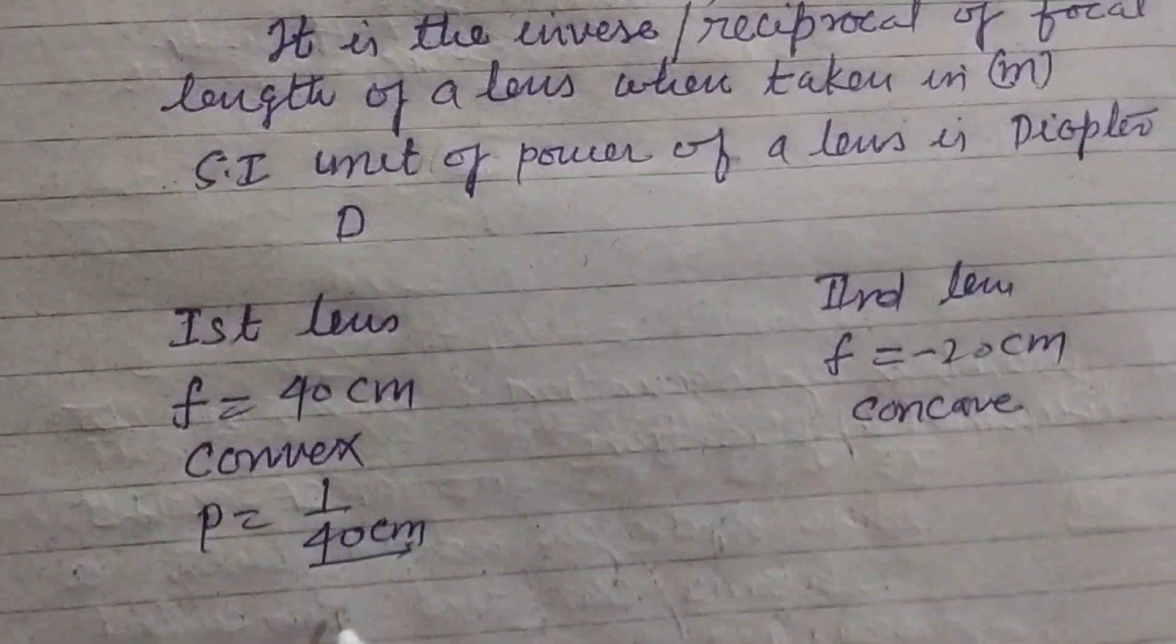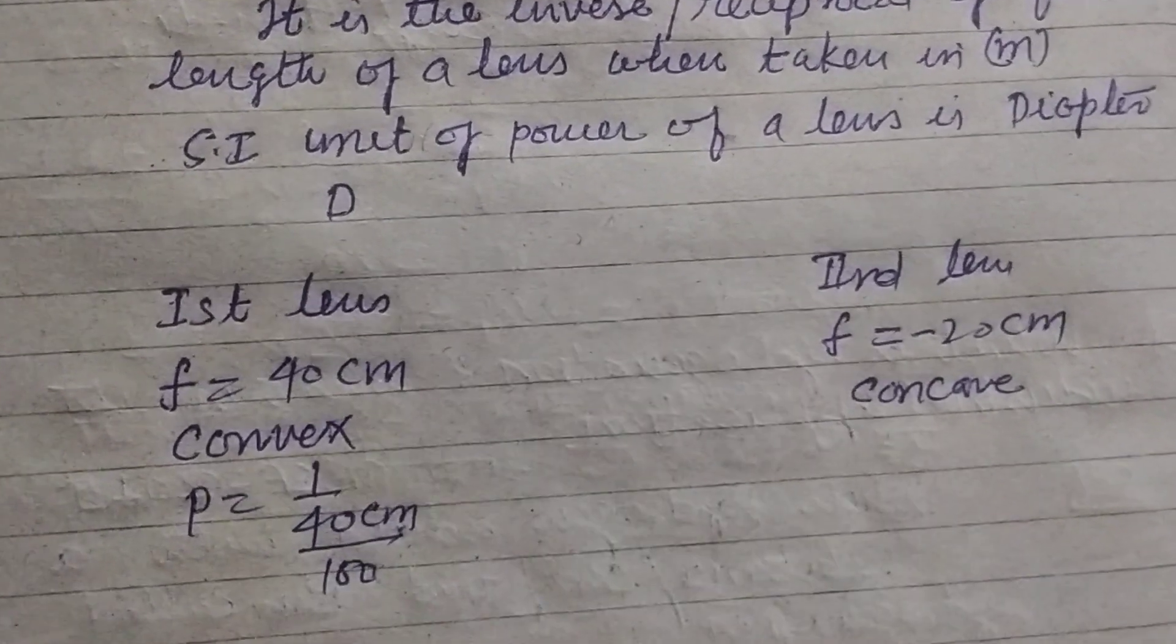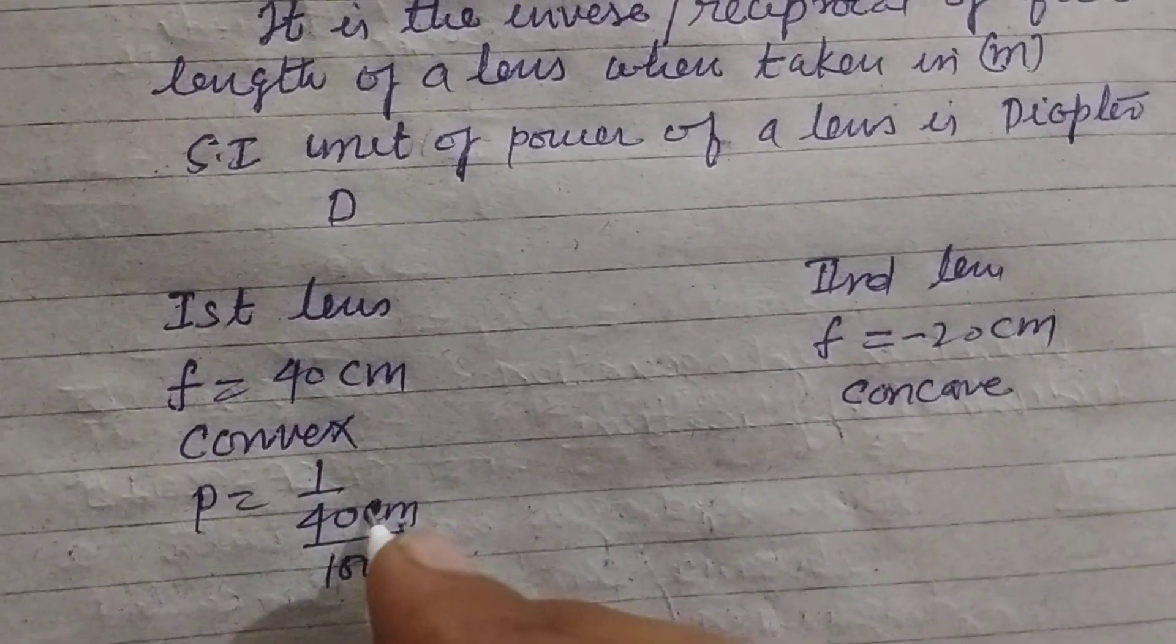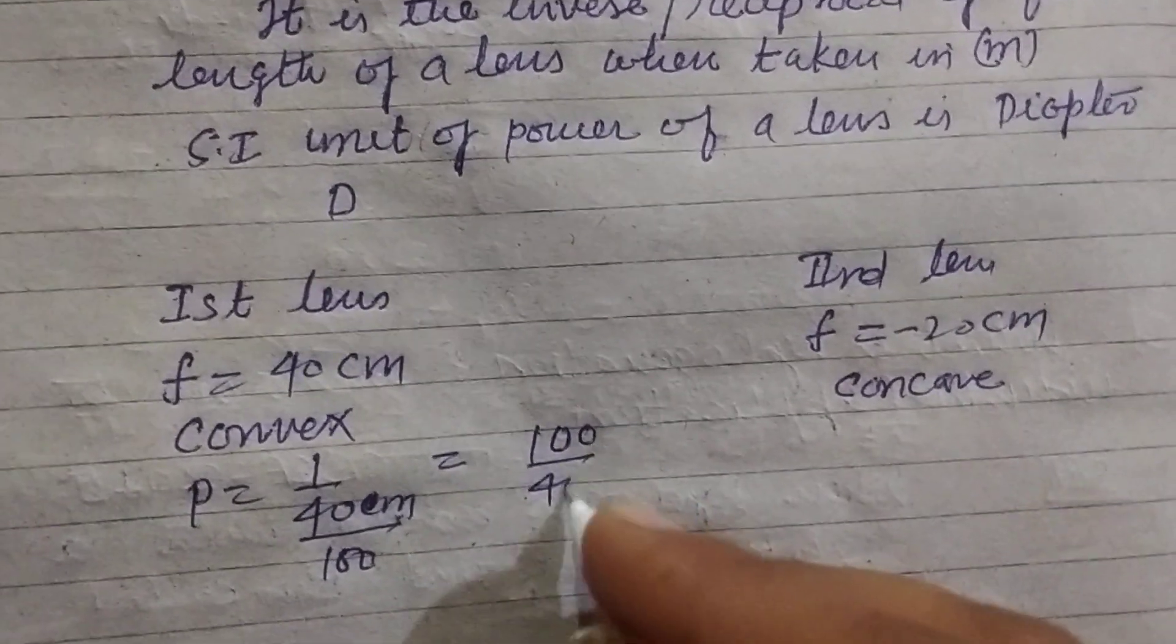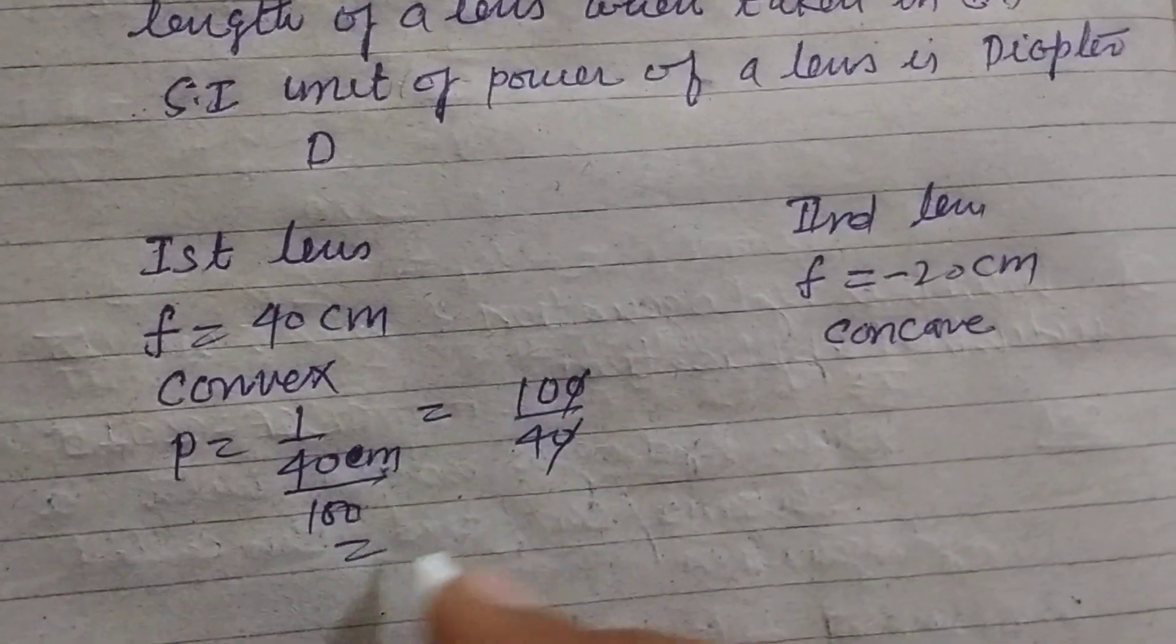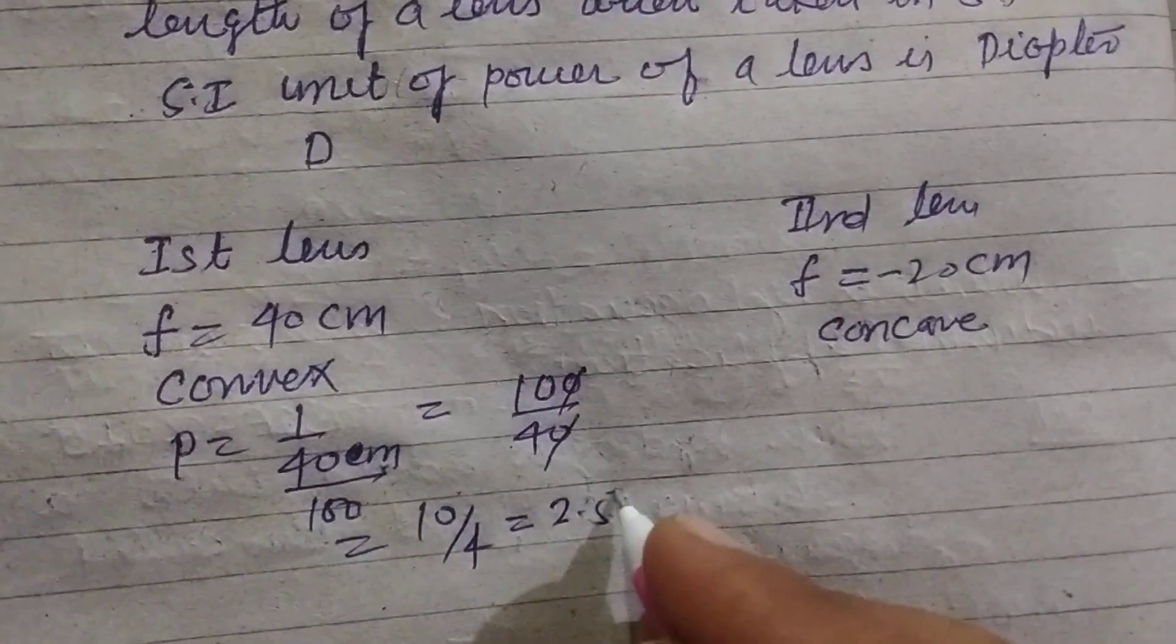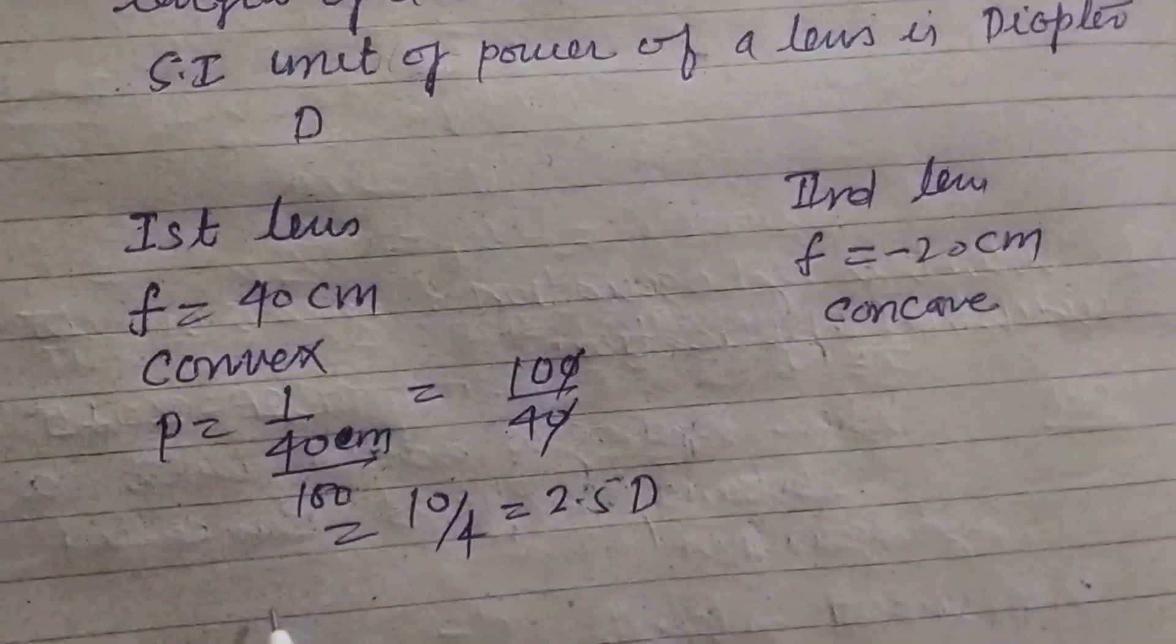And power is 1 upon 40 cm. It is given in cm so we change it in meter by dividing 100. So this is 100 upon 40 which is 10 upon 4 which is 2.5 diopter.